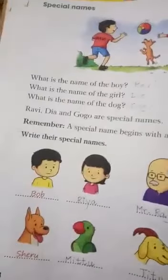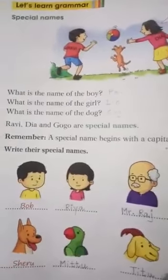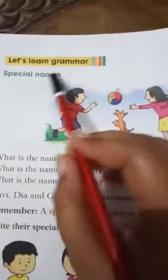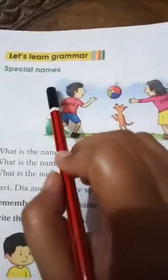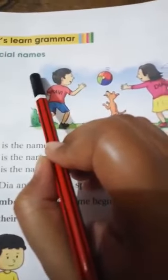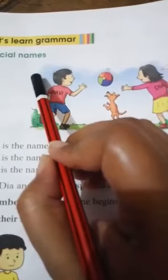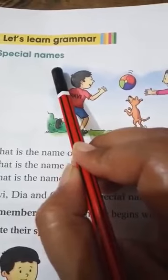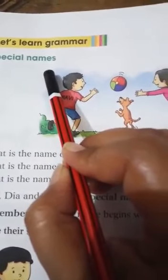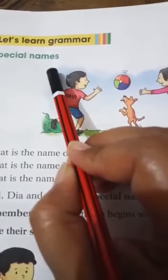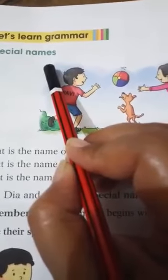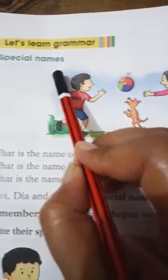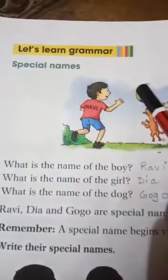Turn your page and come to page number 68. Let's learn grammar — special names. You have already learned special names in your grammar. When learning nouns, you learned special names: a famous personality's name, your name, your teacher's name, your dog's name — these are all special names, called proper nouns.